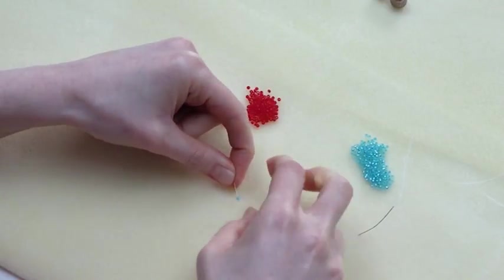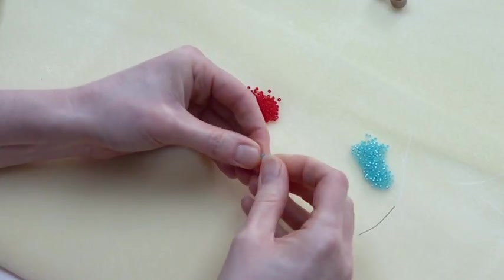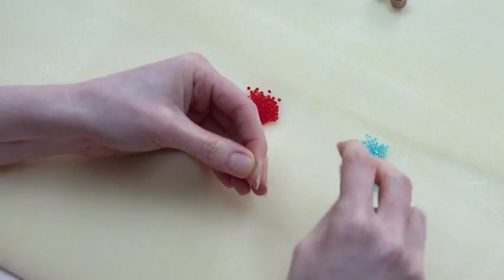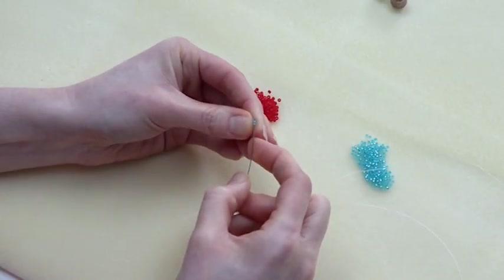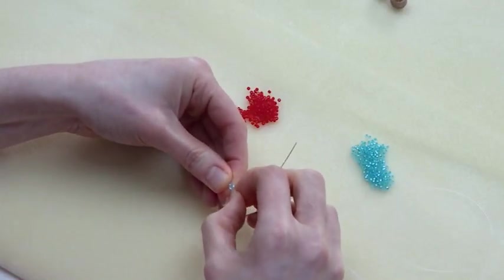I'm just going to knot that twice so those three little beads are held firmly in place and they're in a sort of circle. Then I want to take the needle through the first bead and that's just to pull the knot inside the bead.